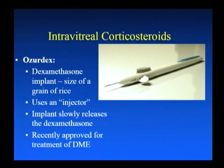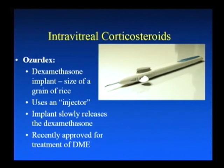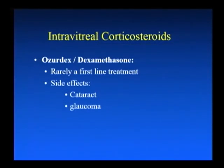Another way of delivering a steroid is dexamethasone, injected with a special injector. A little capsule of dexamethasone — about the size of a grain of rice, or a little smaller — is injected into the eye, and it slowly breaks down, releasing the steroid over about 90 days. This was recently approved for treatment of diabetic macular edema by the FDA. It's still not often used as a first-line treatment; laser and anti-VEGF are used first-line more often, partially because of the side effects of cataract and glaucoma, but it's very effective in patients who need it.